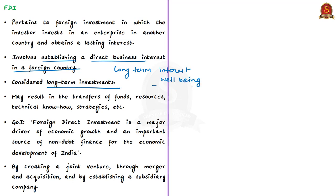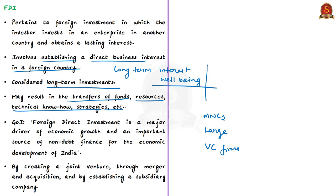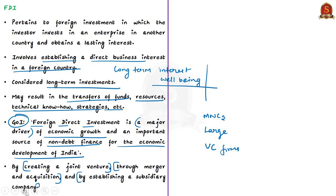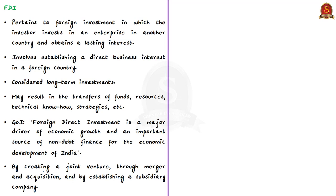Because of the significantly higher level of investments required, foreign direct investments are usually undertaken by multinational companies, large institutions or venture capital firms. FDI may result in transfers of funds, resources or technical know-how and strategies. Because of its potential to generate jobs, the Government of India states that FDI is a major driver of economic growth and an important source of non-debt finance for India's economic development. There are several ways of making FDI: joint ventures, mergers and acquisitions, and establishing a subsidiary. For example, Walmart acquired 77% stake in Flipkart in May 2018. In FY2020 (April 2019 to March 2020), total FDI inflows amounted to $69.63 billion USD.